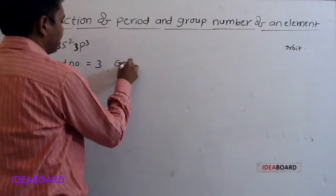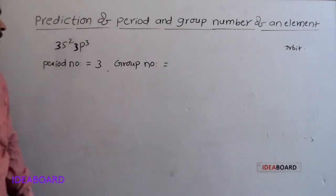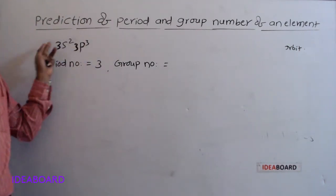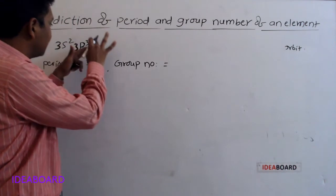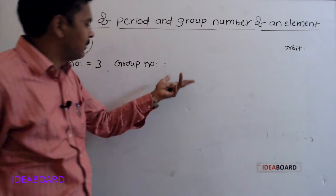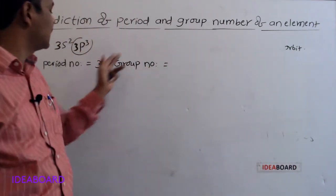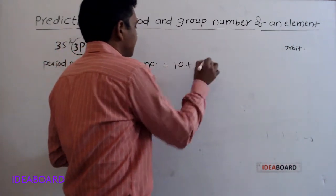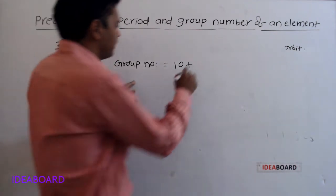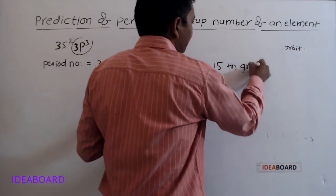Next, group number. The valence configuration is 3s²3p³, which means the element belongs to the p block. For p block elements, group number equals 10 plus the number of valence s and p electrons. The total number of valence electrons is 5, so group number is 10 plus 5 equals 15. It belongs to the 15th group.